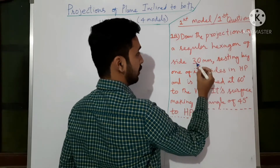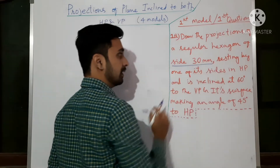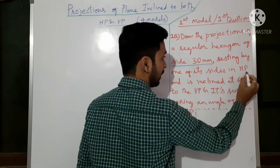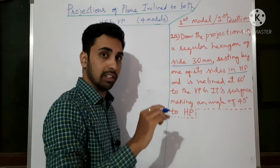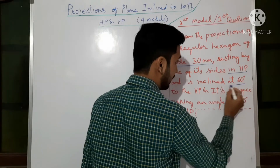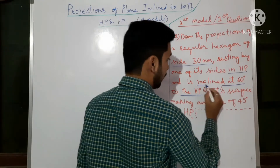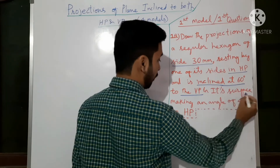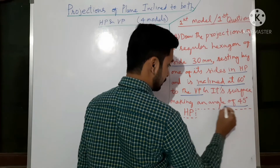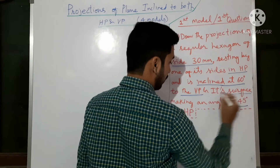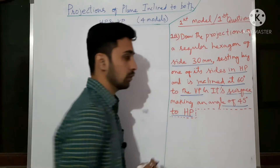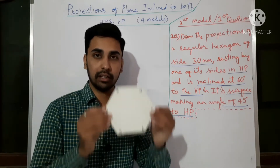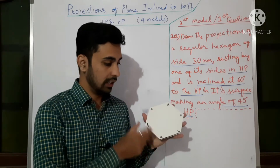Let us start the first question. They have given projections of a hexagon with side or edge length 30 mm, resting by one of its edges in HP. The edge which is resting is also making 60 degrees to the VP. The surface is making an angle of 45 degrees to the HP. These are the given conditions. Let us try to understand with the help of a hexagon.